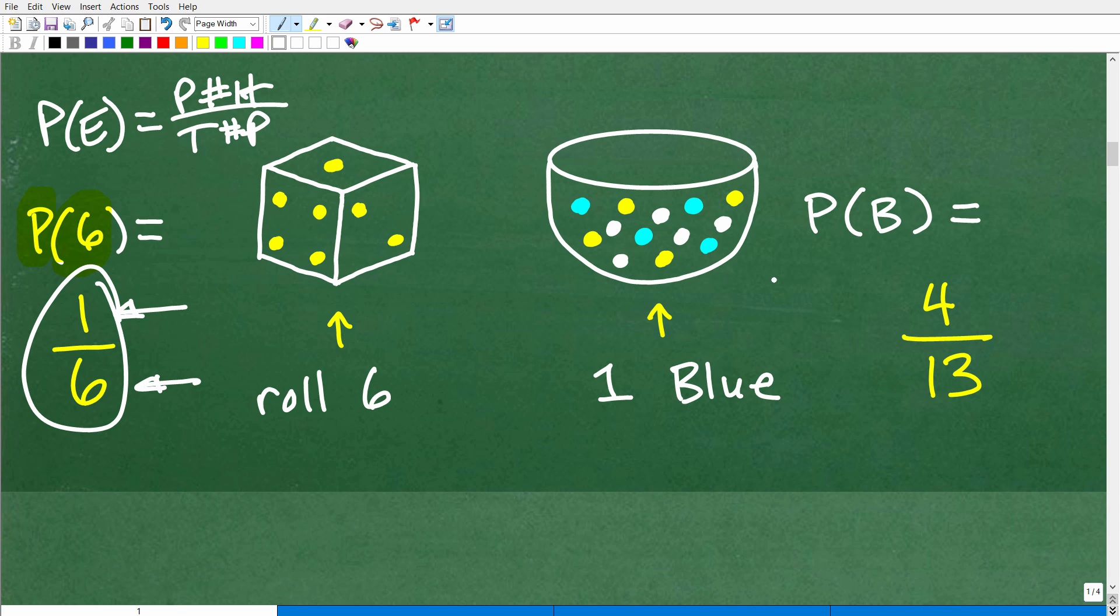Now let's go ahead and talk about getting a blue out of this jar. So the probability of getting a blue, well, how many ways can I get a blue out of this jar? There is 1, 2, 3, 4. So there's 4 possible ways I can get a blue out of this jar. I could grab that one or grab that one, that one, or that one there. So there's 4 different ways I can get a blue out of this jar. And there are a total of 13 marbles, so there's 13 possible different outcomes. So the probability of getting a blue is 4 out of 13.